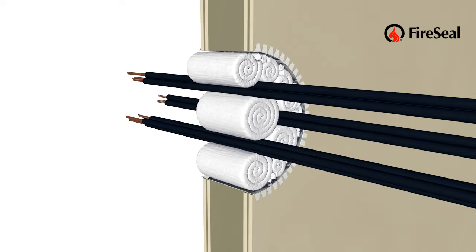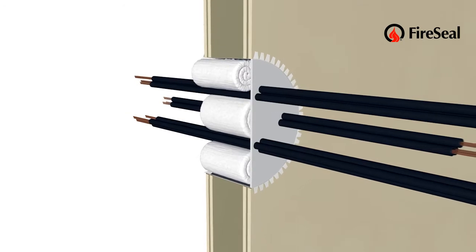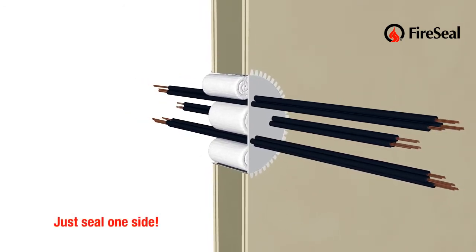Seal one side with FireStop Sealant 3000, white, grey or black. Alternatively, use FireStop 400. The sealant's thickness shall be 12 millimeters.